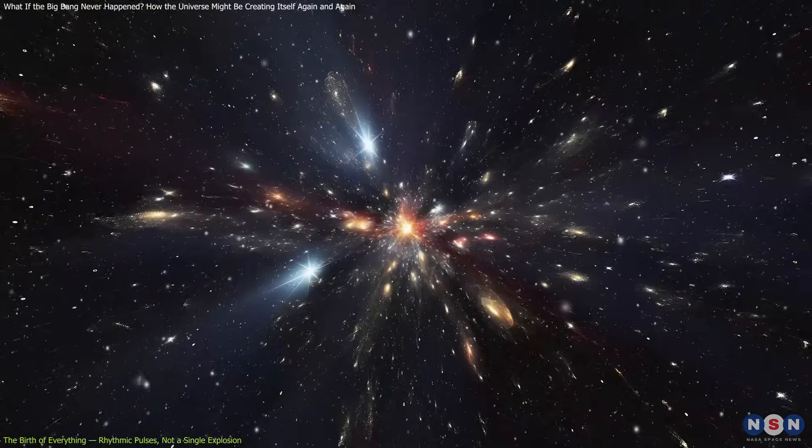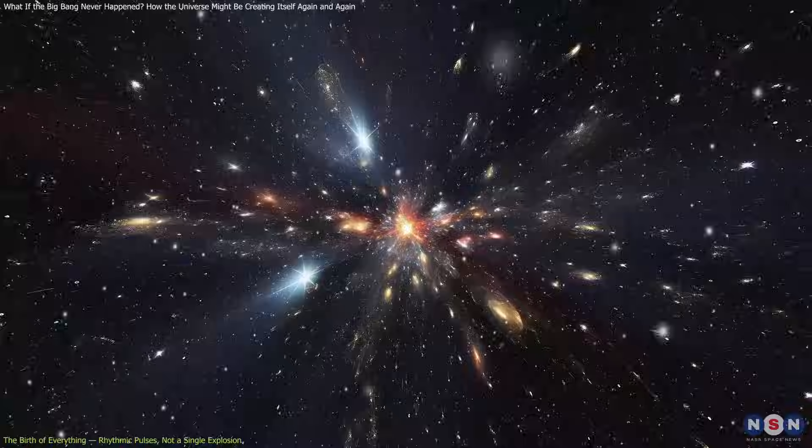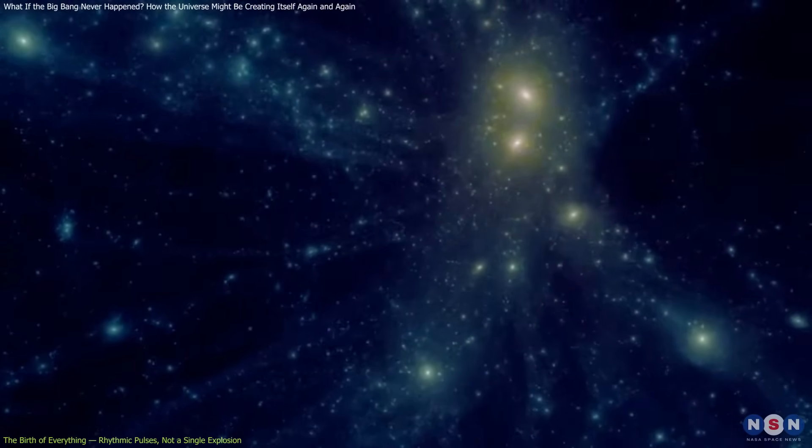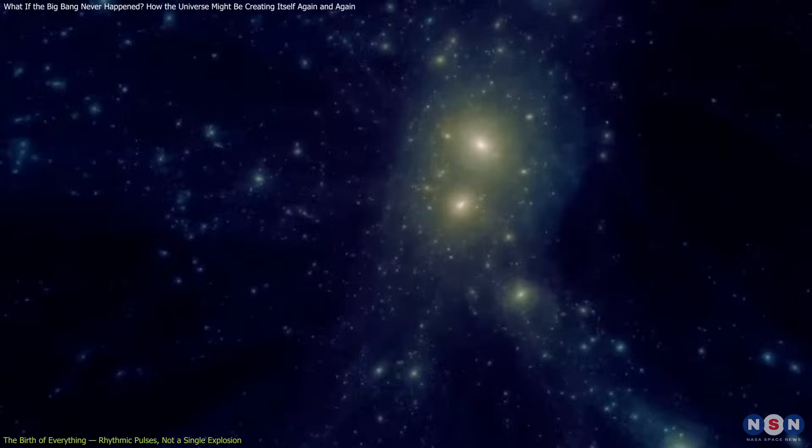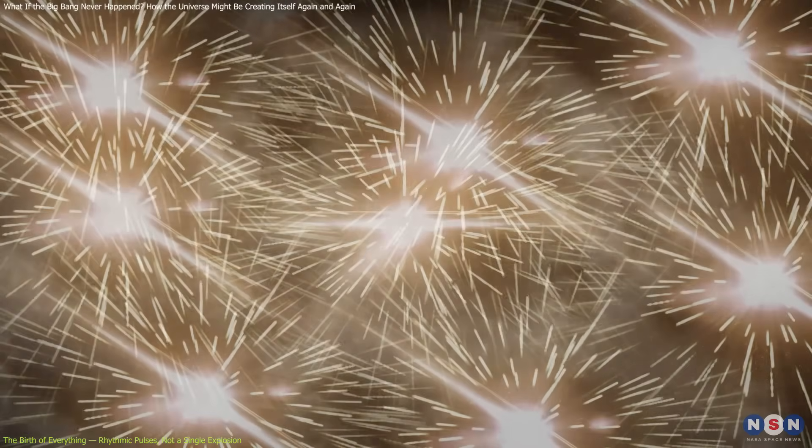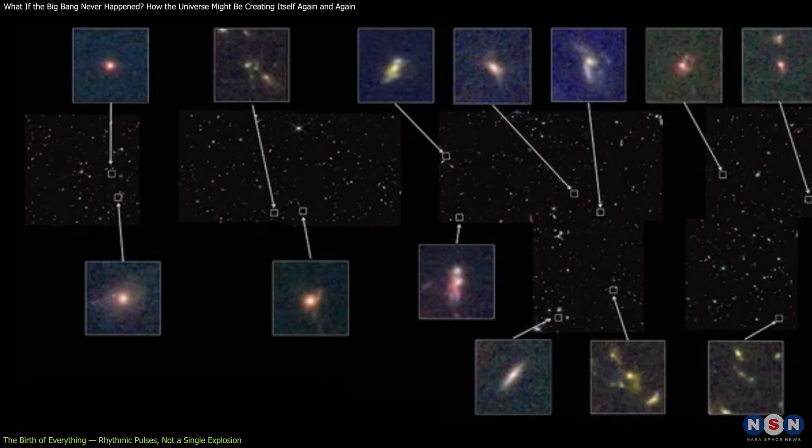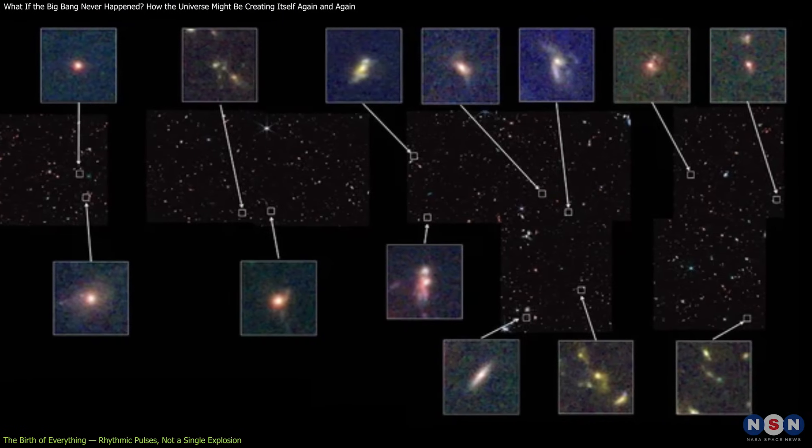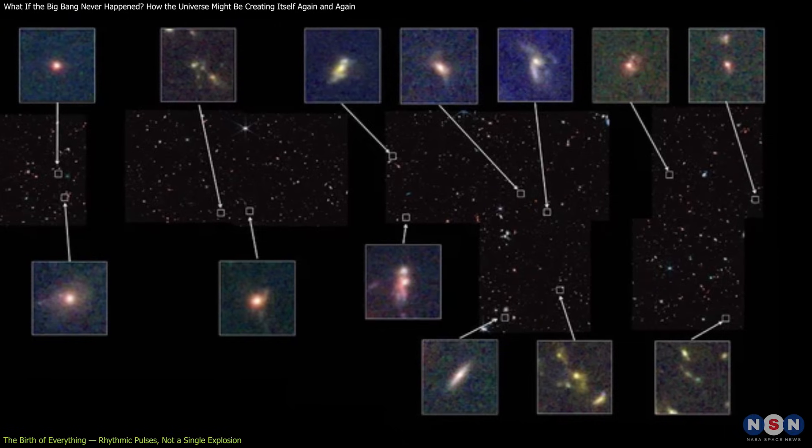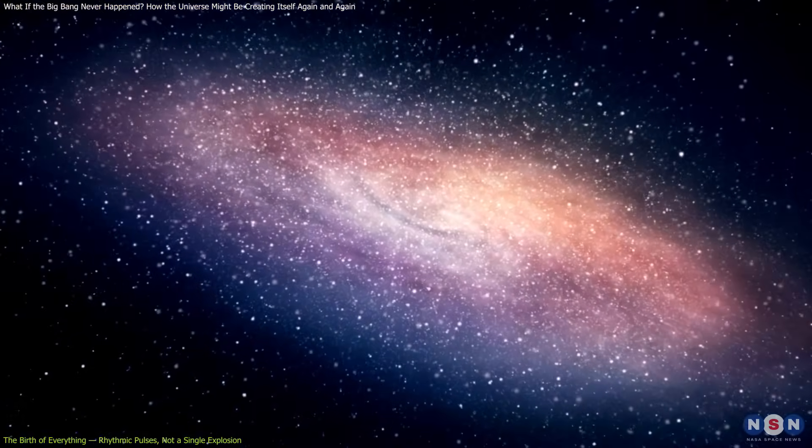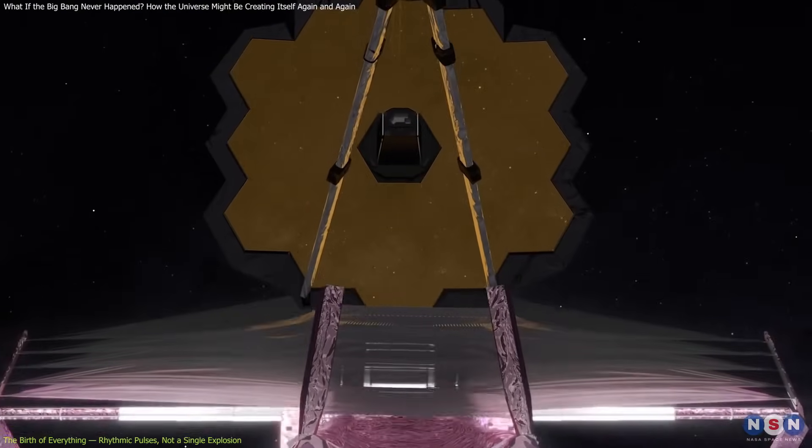Their speed is immense, so rapid they evade direct detection. But the large-scale structures left behind—galaxies, stars, and cosmic webs—hint at their presence. This rhythmic progression offers an elegant explanation for astronomical anomalies. Observations of fully formed galaxies in the early universe have confused astronomers for years. A series of energetic injections could accelerate the formation of such systems, reconciling theory with what telescopes actually see.